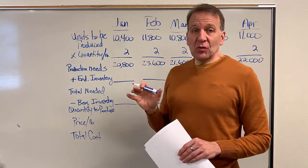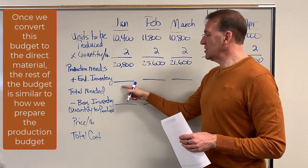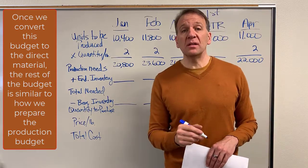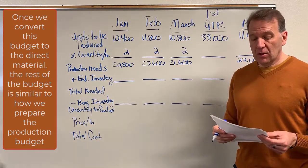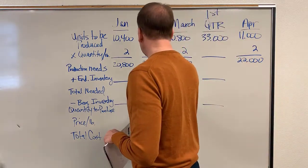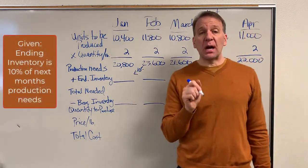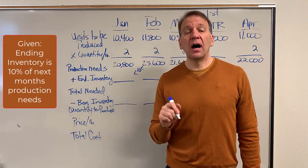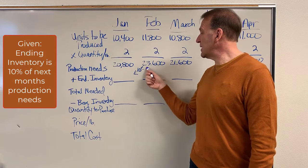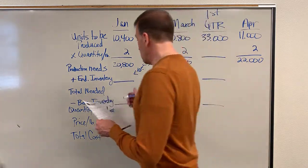The rest of this looks very similar to our production budget. We add in our ending inventory, add those together, and subtract out our beginning inventory to get how many pounds of potatoes we'll need by month and for the quarter total. The problem tells us that we need 10% of the next month's needs in ending inventory. So next month's 23,600 — we need 10% of that, which gives us ending inventory of 2,360 in January.